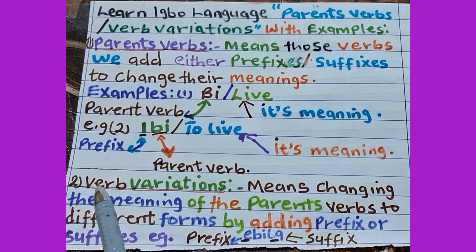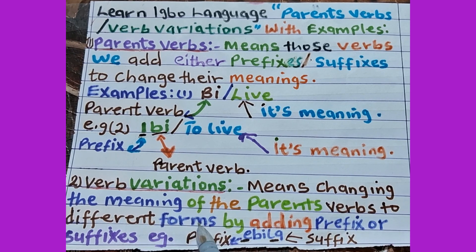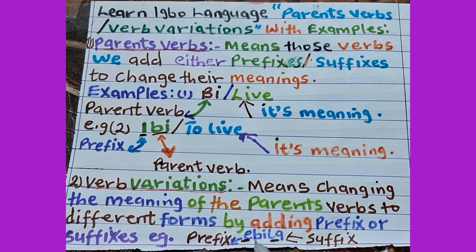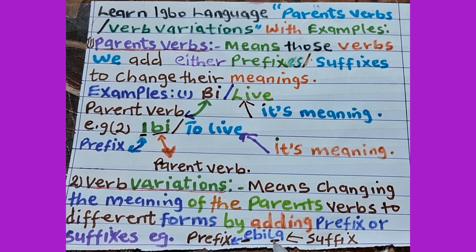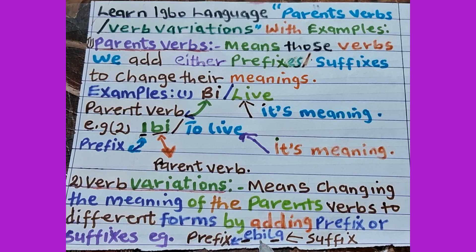Number two: verb variations means changing the meaning of the parent verbs to different forms by adding a prefix or suffix. For example, 'ebe' — here, 'e' is our prefix, added to 'be'. 'La' is our suffix. So it becomes 'ebela'. Here 'e' is the prefix, 'la' or 'li' is the suffix, and 'be' is the main verb. Have you seen how 'be' varies to 'ebela'?